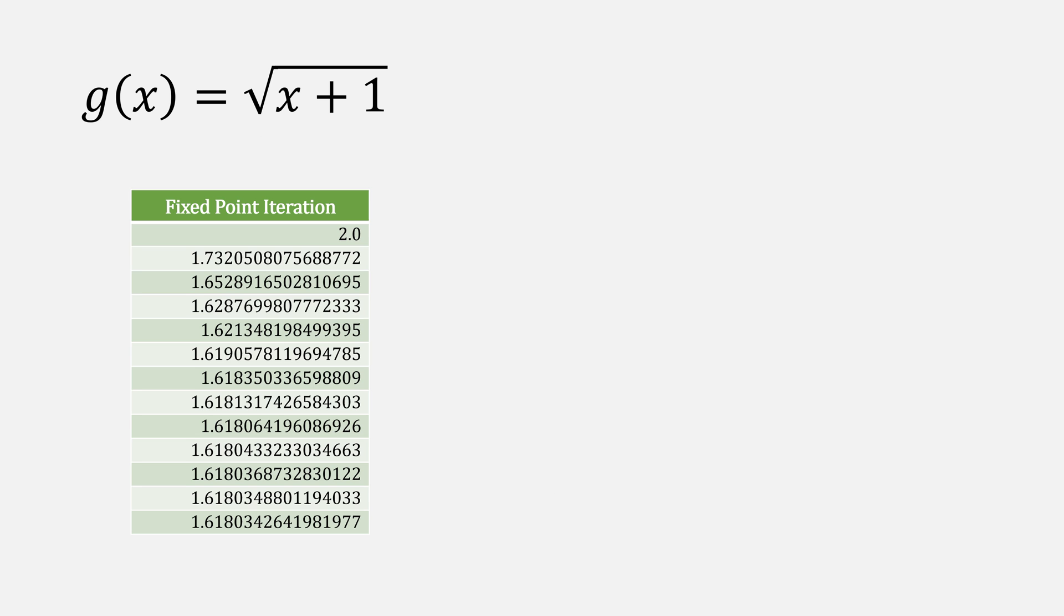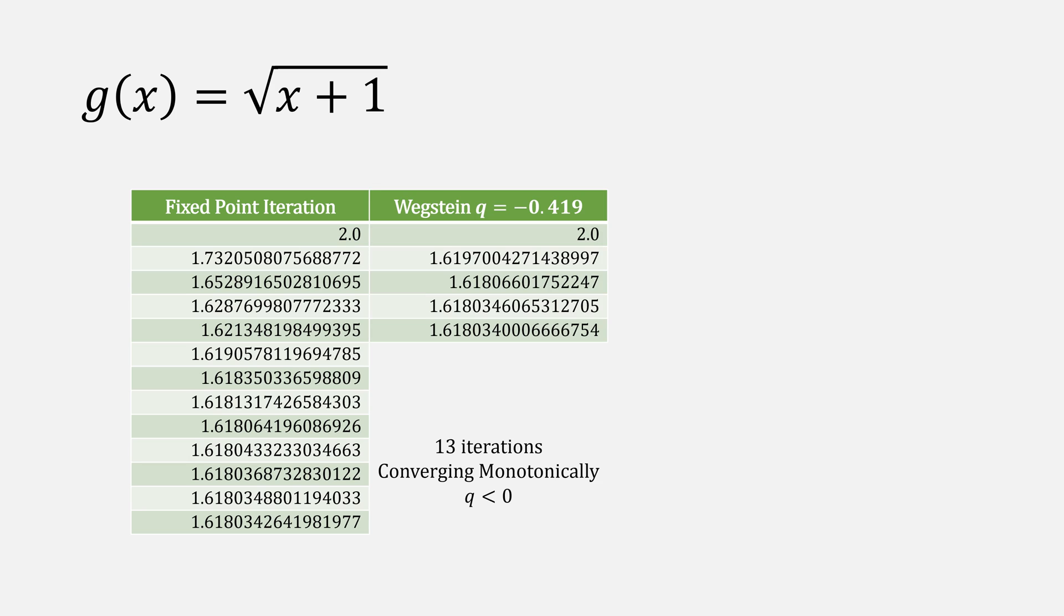If our g of x is the square root of x plus 1, then fixed-point iteration will converge in a monotonic fashion in 13 iterations, therefore we'll choose a q of less than 0. And if we choose this value for q, it only takes 5 iterations for this to converge.